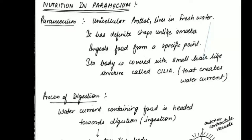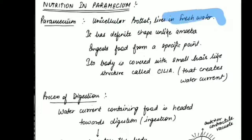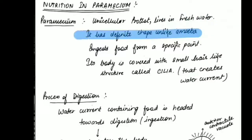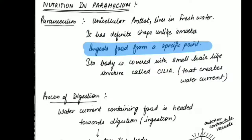Similarly, we have another unicellular organism, also important but less so than amoeba — paramecium. Paramecium is a unicellular protist; it comes in the category of Protista and lives in fresh water. Unlike amoeba, it has a definite shape. While amoeba kept changing shape due to pseudopodia coming out from any part of its surface, paramecium does not change shape and ingests food from a specific point.